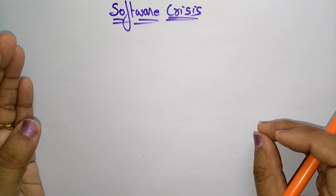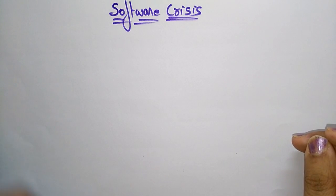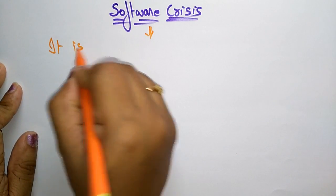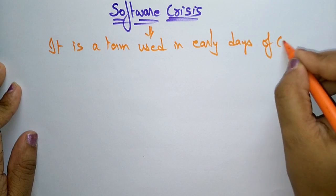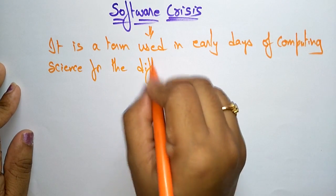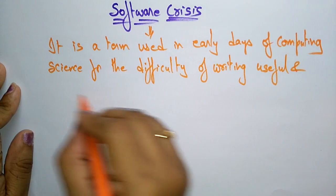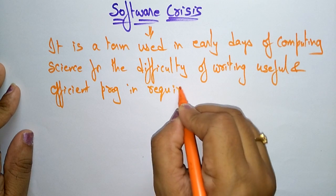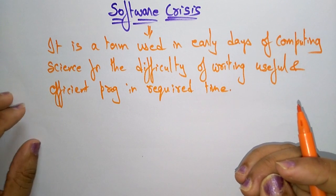It is a term used in early days of computing science for the difficulty of writing useful and efficient programs in the required time. In those days, it was difficult to write useful and efficient programs within the required time, and that usually led to a software crisis.